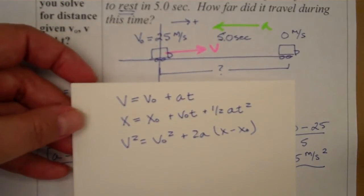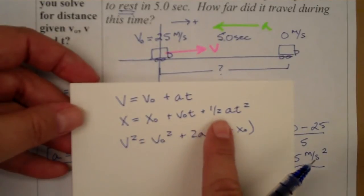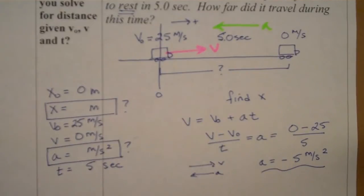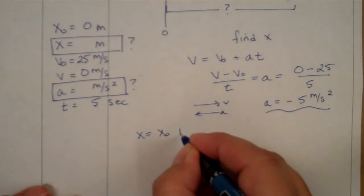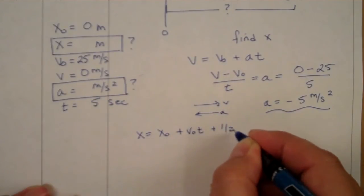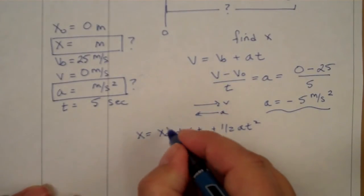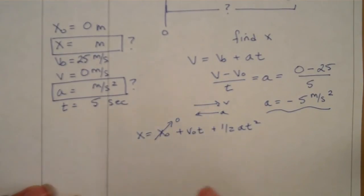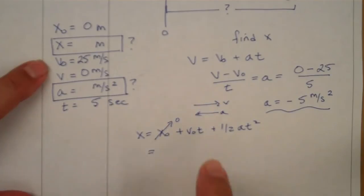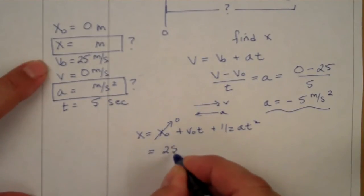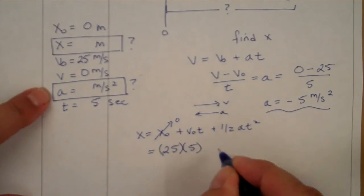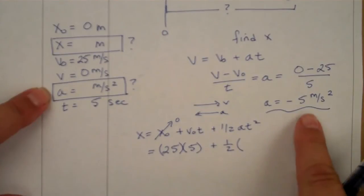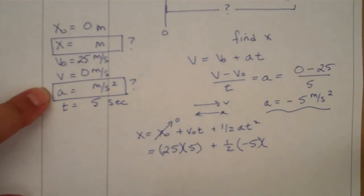Now that we know the acceleration, we can use any of our three equations. We're looking for position, so let's use the position equation: x = x₀ + v₀t + ½at². Our initial position is zero. Plugging in: initial velocity was 25, time is 5 seconds, plus one half times acceleration negative 5, times time 5 seconds squared.